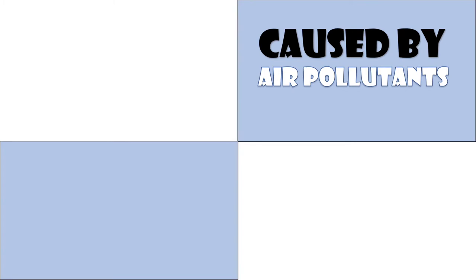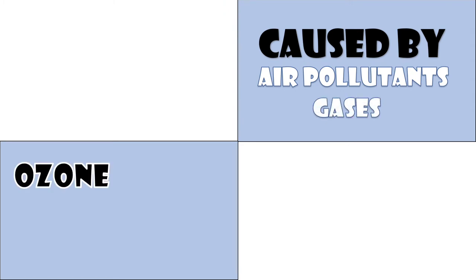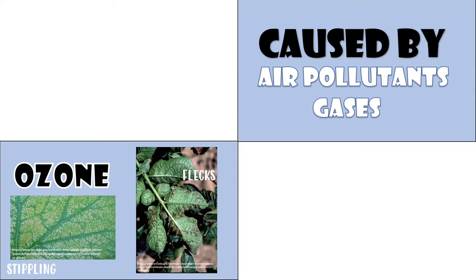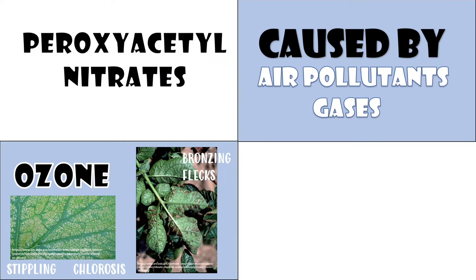Air pollutants are mainly gases and particulates produced from factories, automobile exhausts, man-related activities, and others produced in nature such as ozone from lightning and ashes from volcanic eruption. Ozone from automobile exhausts, other internal combustion engines, the stratosphere, or from lightning is the most destructive air pollutant to plants. It causes stippling and tiny flecks, bronzing, and chlorosis. Peroxyacetyl nitrates (PAN) plasmolyze spongy mesophyll cells and lower epidermal cells, resulting in dehydration and filling of empty space with air.